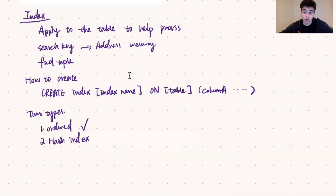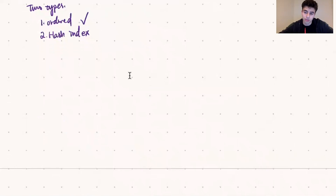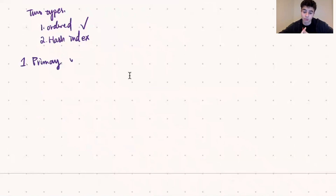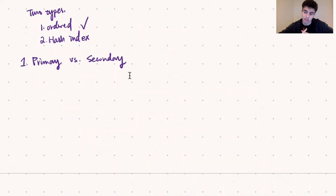For our ordered index, we have three options to think about as the index is being created. The first option is whether or not this index is going to be primary or secondary. The second option is whether or not this index is going to be dense or sparse. And the last option is whether or not this index is going to be single leveled or multi-leveled.